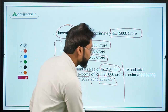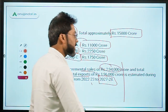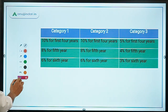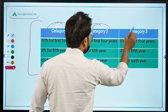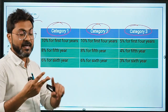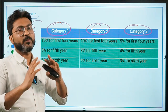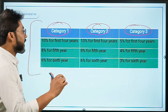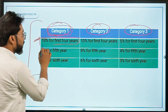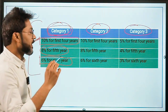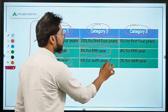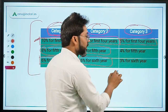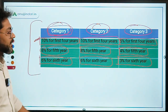The base year for calculating incremental sales is 2019-20. All goods under this scheme are divided into three categories. For Category 1 and Category 2 products, the incentive is 10% for the first four years, 8% for the fifth year, and 6% for the sixth year. For Category 3 products, the incentive is 5% for the first four years, 4% for the fifth year, and 3% for the sixth year.